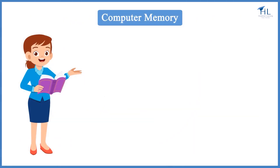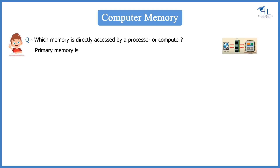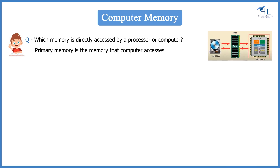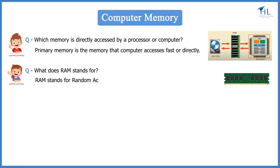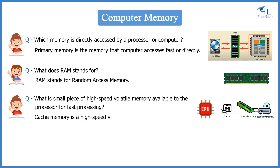Now it is time to revise. Which memory is directly accessed by a processor or computer? Primary memory is the memory that a computer accesses fast or directly. What does RAM stand for? RAM stands for Random Access Memory. What is a small piece of high-speed, volatile memory available to the processor for fast processing? Cache memory is a high-speed, volatile memory available to the processor for fast processing.